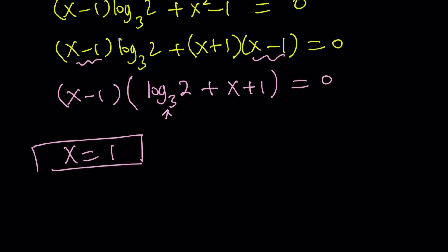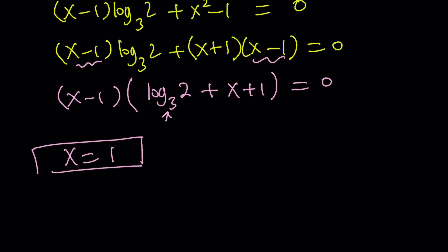Let's take a look at the other solution, which is not that straightforward, but it's fairly easy. We can write log base 3 of 2 plus x plus 1 equals 0. From here, if you isolate x, you would write it as negative 1 minus log base 3 of 2. That should be the solution, right? But there's other ways to write it.